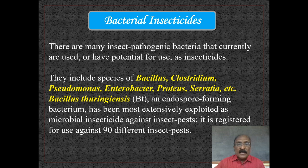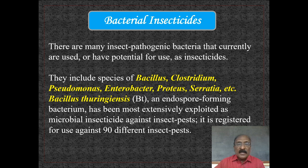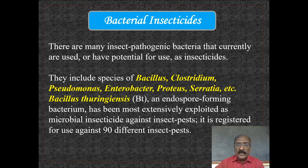The bacterial bio-insecticides include many insect pathogenic bacteria that currently are used or have potential for use as insecticides. They include species of Bacillus, Clostridium, Pseudomonas, Enterobacter, Proteus, Serratia, etc. Bacillus thuringiensis, Bt, an endospore-forming bacterium, has been most extensively exploited as a microbial insecticide against insect pests.